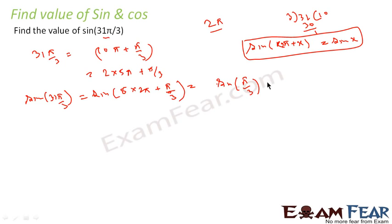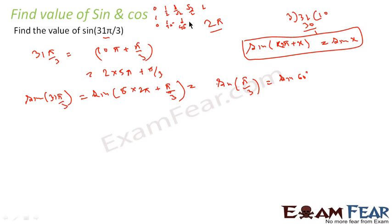Sin(π/3) is sin(60°). To find sin 60°, we use the table: for sin, the values are 0, 1/2, 1/√2, √3/2, 1 at 0°, 30°, 45°, 60°, 90° respectively. So sin 60° equals √3/2. We can get these values from the table, using the pattern 0, 1/2, 1/√2, √3/2, 1.